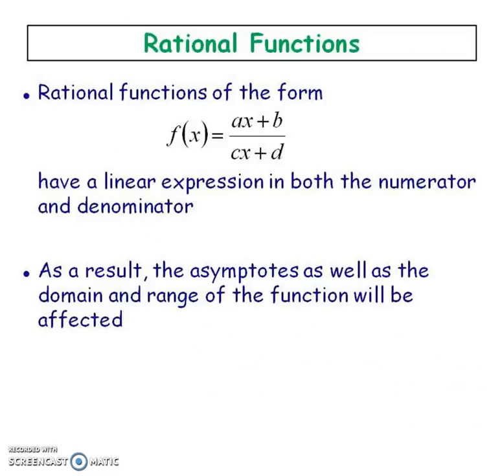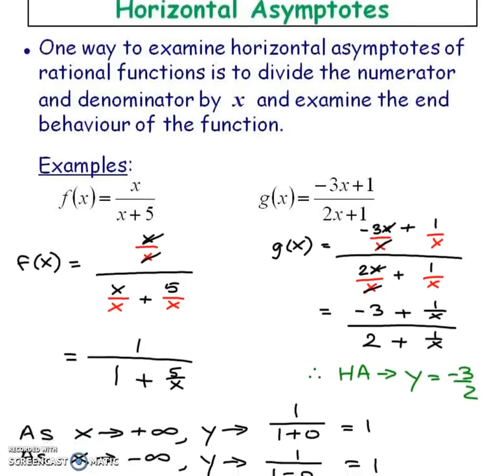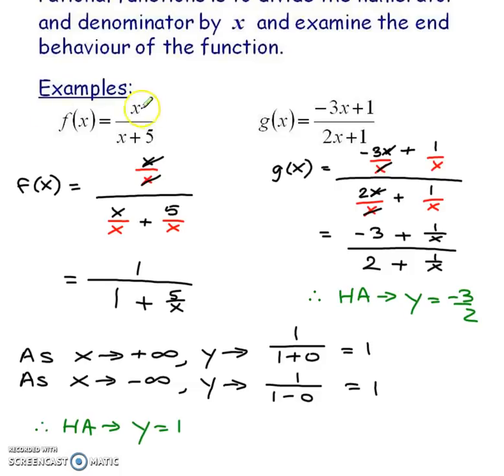This is just a slide that's showing you again that you get linears on the top and bottom of the function and it's going to have certain effects on your asymptotes. So let's start with the more difficult way.